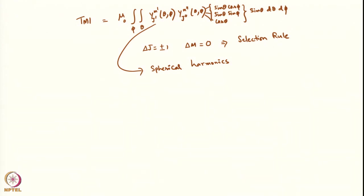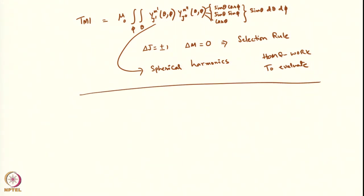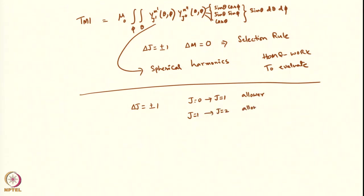So the selection rule gives Δj = ±1, meaning transition from j = 0 to j = 1 is allowed, similarly from j = 1 to j = 2 is allowed, and so on.